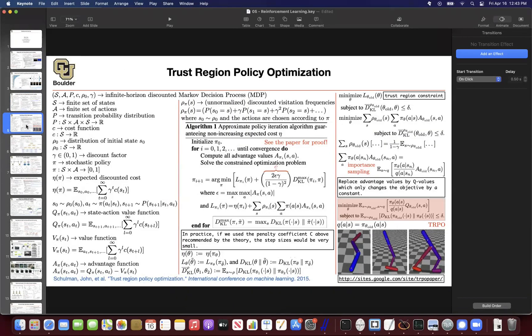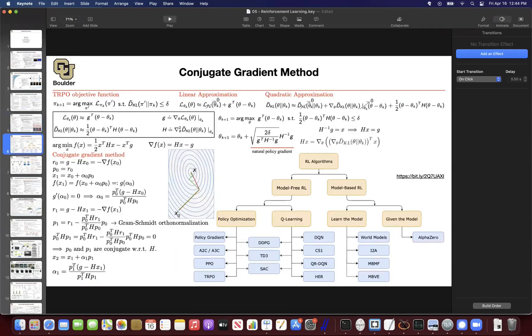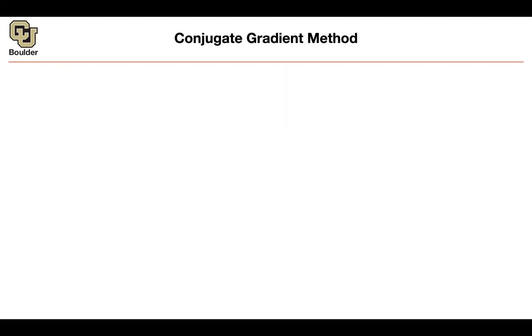Then we moved away from Q-learning and toward policy optimization last session. One of you asked me to go into more detail on the linear approximation to the objective and the quadratic approximation to the constraint in Trust Region Policy Optimization. That's actually a good idea, so let's do that before we continue. Let's also cover the conjugate gradient method and why we need it.